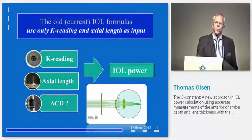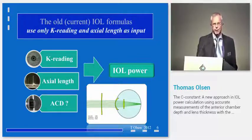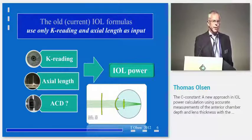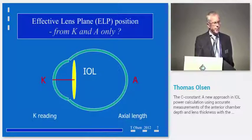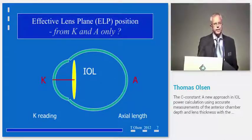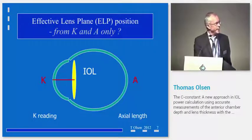Especially so if you have one of the old formulas, taking only the K-reading and the axial length — that's all. Behind the curtain, the formula will calculate the effective lens position with a certain algorithm from only the K-reading and the axial length, and that gives some problems. Many of the formulas use a very old concept, and some of the models we still use are based on the Fioro approach from 1967 — so it's not new. It dates back to the time when we did surgery at another level.